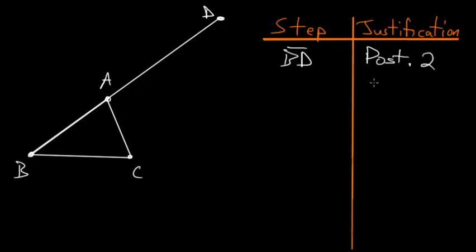And then from here, we want to use book one, proposition number three, which basically says that if we have two lines of unequal length, we can cut off a portion of the bigger line equal to the smaller line. So let's cut off a portion of this line AD equal to the line AC. So right about here, and we can call this point E.